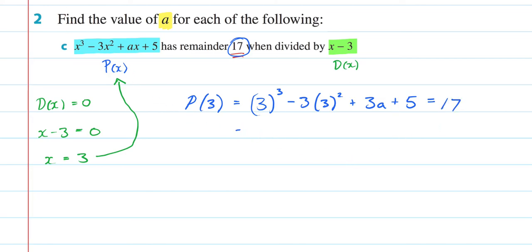I now am going to solve this. So it's going to wind up being 3 cubed is 27 minus 3 squared is 9 times 3 is 27 plus 3a plus 5 equals 17. 27 minus 27 is going to be 0, so I'm just going to be left with 3a plus 5 is equal to 17.